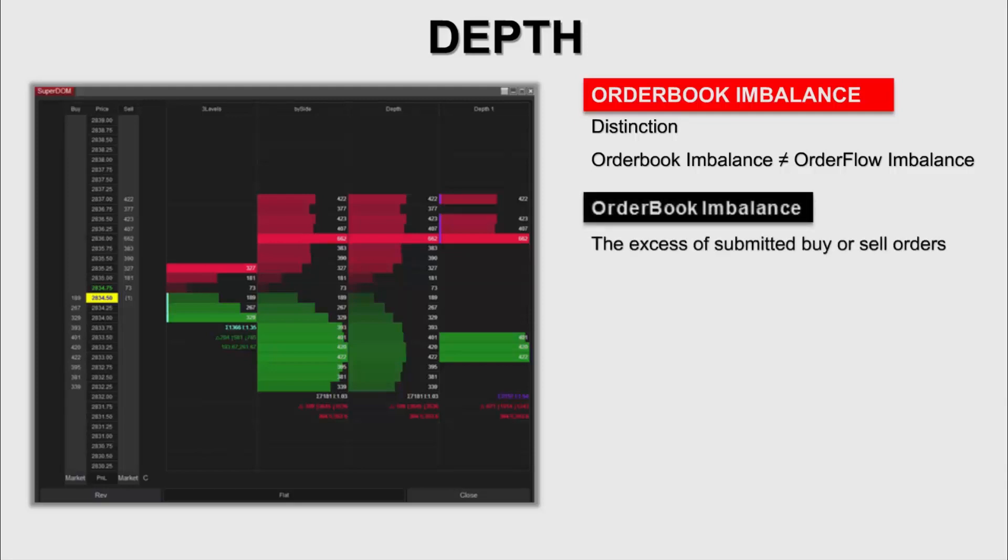The limit order book imbalance regards the imbalance that occurs in the order book, thus the excess of submitted buy or sell orders to the exchange.